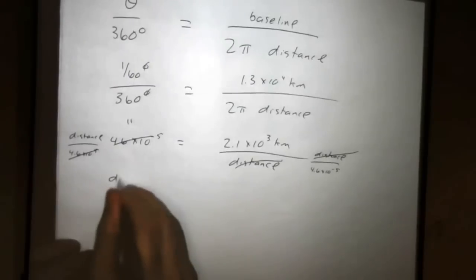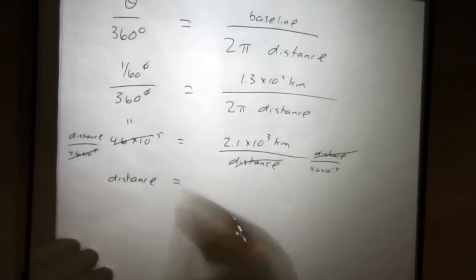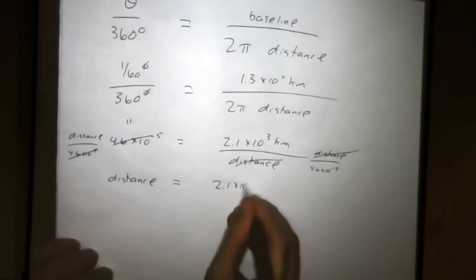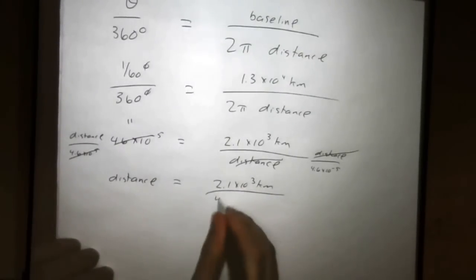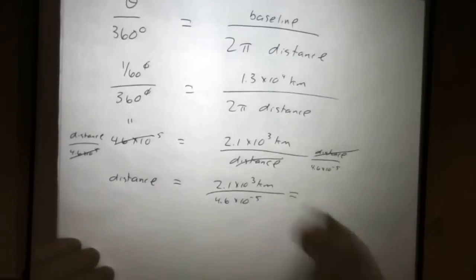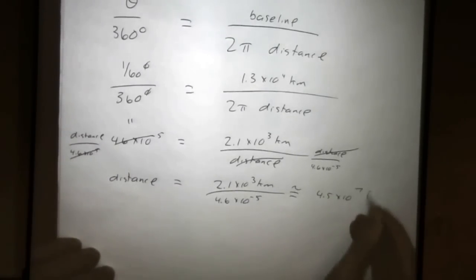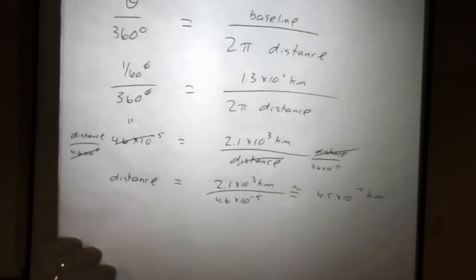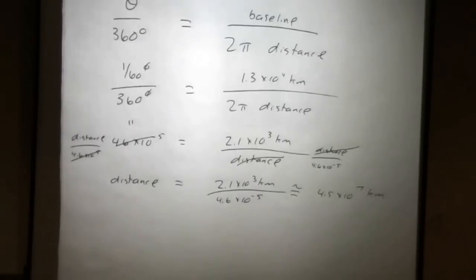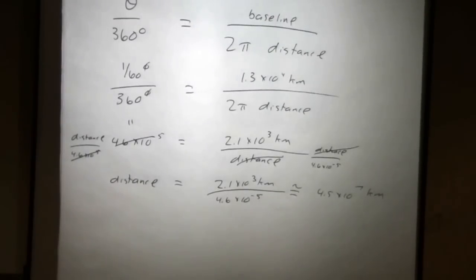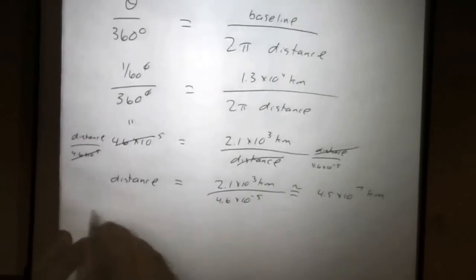So we get distance is equal to 2.1 times 10 to the 3 kilometers, divided by 4.6 times 10 to the minus 5. You plug that into a calculator, and you get about 4.5 times 10 to the 7 kilometers. So that's the distance to Venus at closest approach. You can measure it using the parallax technique. Now, why are we doing this other than to have an example of a parallax calculation? Well, we want to know how big the astronomical unit is in something that we're familiar with. And kilometers, we all know what a kilometer is.